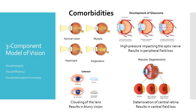So just a quick review, we're going to talk about the three-component model of vision looking at visual integrity, visual efficiency, and visual information processing. In terms of visual integrity, there may be a lot of comorbidities that we have to consider when working with a neurological patient. We should consider if they're nearsighted or farsighted, or if they have an astigmatism, and when the last time they were actually to their eye care professional for a checkup.